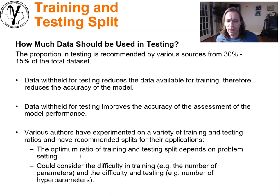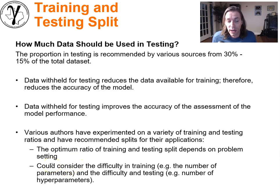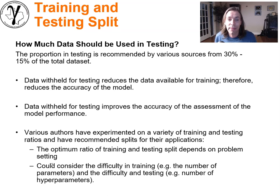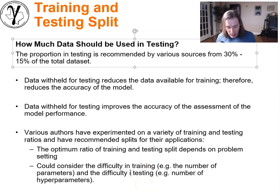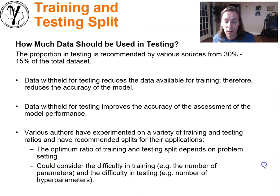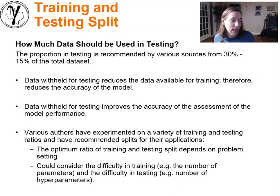One cool way to think about the optimum training/testing ratio is to consider the difficulty in training — how many parameters you're fitting and how much variation you see in the data — alongside the difficulty in testing: how many hyperparameters you have to tune, and the sensitivity of those hyperparameters to the model goodness response.